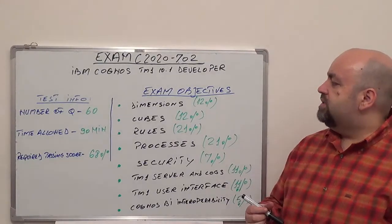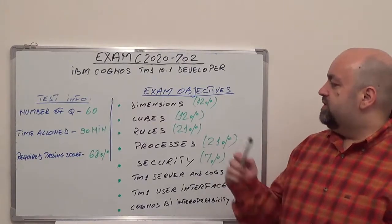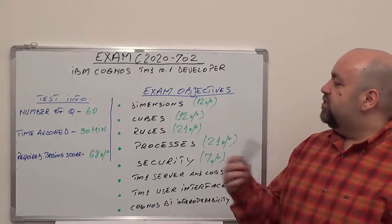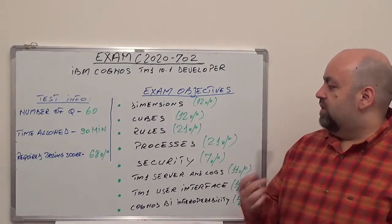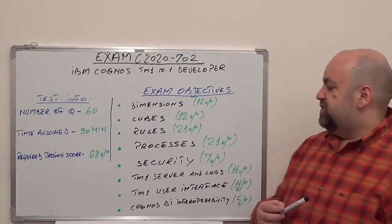The first one is Dimensions with 12% of total questions. Next one is Cubes, 12% from total questions. Next one is Rules, 21% from total questions. Next one is Processes, 21% from total questions.